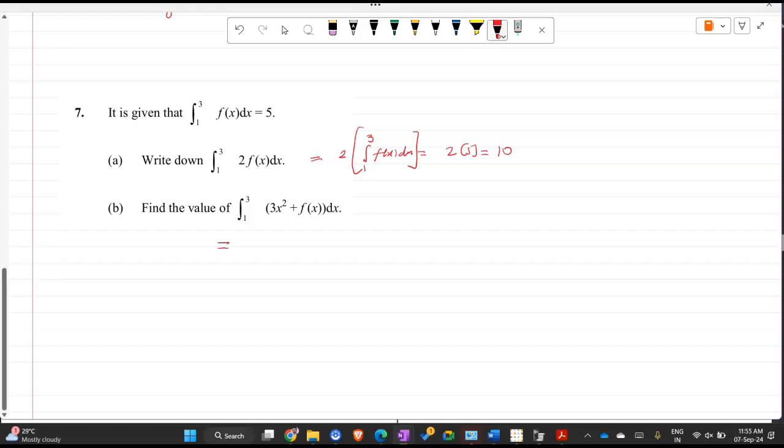Now this one, separate it out: integral 1 to 3 of 3x²dx plus integral 1 to 3 of f(x)dx. This will be 3x³/3, the 3s cancel, plus this entire thing's value is 5. So 3³ minus 1³ plus 5. 3³ is 27 minus 1, 26.